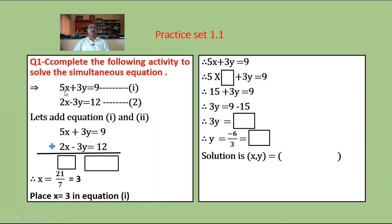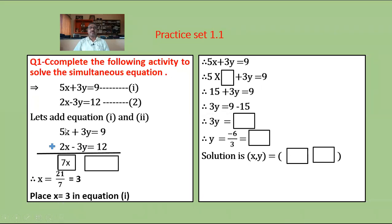The complete solution of the activity: equation 1 is 5x plus 3y equals 9, equation 2 is 2x minus 3y equals 12. Adding the two equations, the y coefficients are plus 3 and minus 3, so plus 3y minus 3y cancel. Then 9 plus 12 equals 21, hence 7x equals 21, so x equals 21 upon 7, which equals 3.